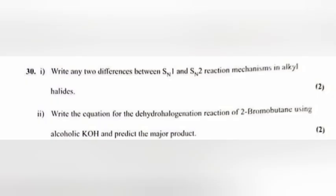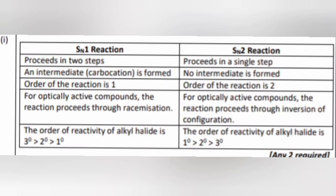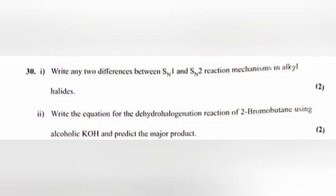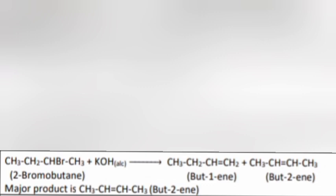Question 30.1: Write any two differences between SN1 and SN2 reaction mechanisms in alkyl halides. Answer — SN1: proceeds in two steps; SN2: proceeds in a single step. SN1: order of reaction is 1; SN2: order of reaction is 2. 30.2: Write the equation for the dehydrohalogenation of 2-bromobutane using alcoholic KOH and predict the major product. Answer: Major product is CH₃CH=CHCH₃ (but-2-ene).